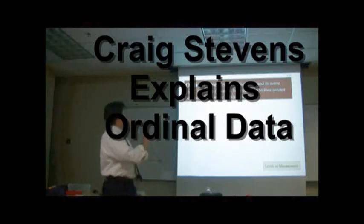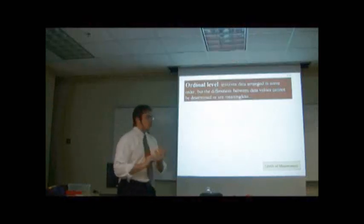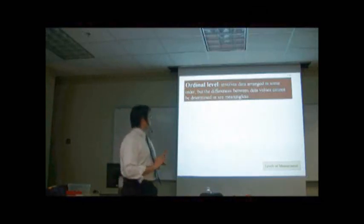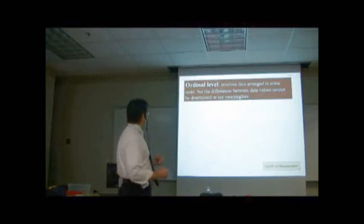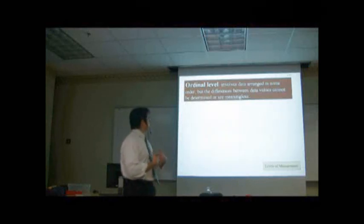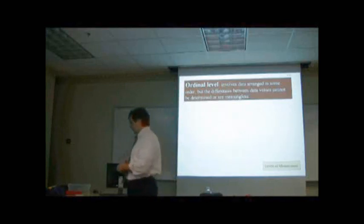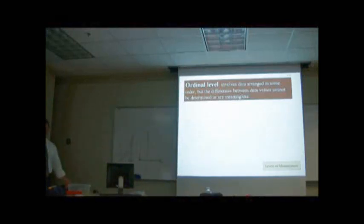Ordinal level involves data arranged in some order, but the differences between the data values cannot be determined or are meaningless. So now we've got some kind of order, but the differences between data values cannot be determined or are meaningless. We'll show some examples of that. But it's got to be in some kind of order, right? It kind of sounds like ordinal, some kind of order. Does that make sense?